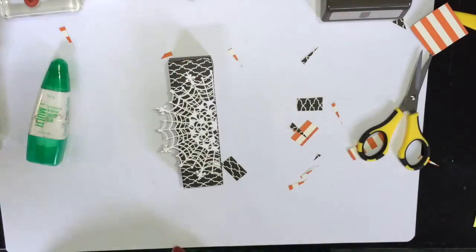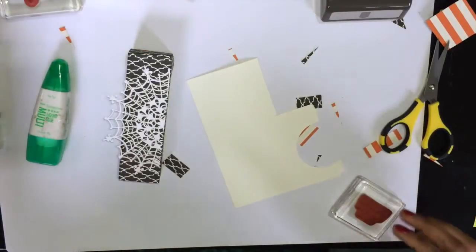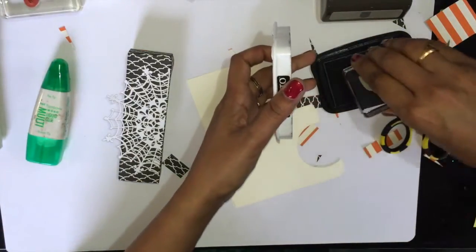Enough. Now take your scrap piece of Very Vanilla cardstock. I'm using Memento Tuxedo Black ink to stamp my image.